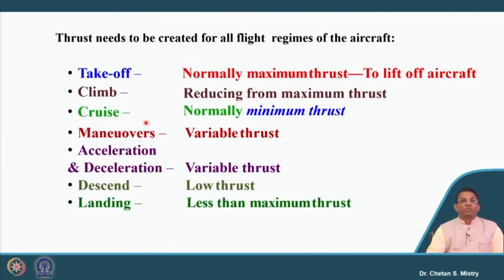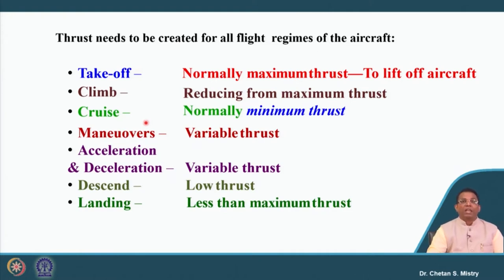The thrust requirement varies across different operations and flight regimes: maximum thrust is required at takeoff; during climb, maximum thrust requirement reduces; during cruise, thrust requirement is minimum. For military aircraft maneuvers, variable thrust is needed, and for acceleration and deceleration, variable thrust is also required. For descent and landing, thrust requirement is less than the maximum.